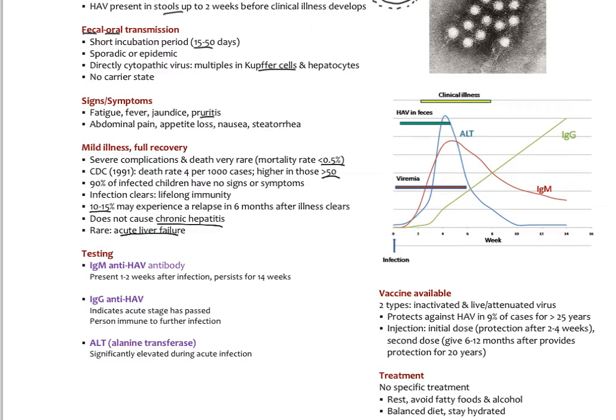There's a couple of blood tests we do for hepatitis A. We test different antibodies. The IgM antibodies, remember from immunology, pop up very quickly after initial exposure. Then over time they're replaced by IgG antibodies. We do the IgM anti-HAV antibody, which is present a couple of weeks after infection and persists up to 14 weeks.